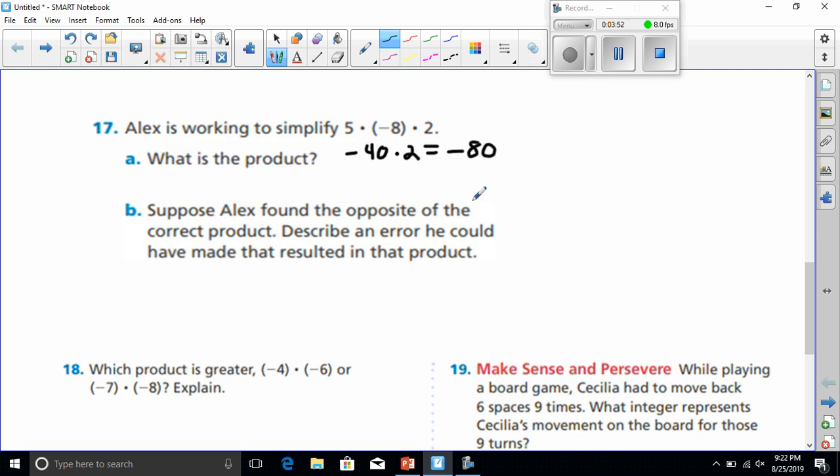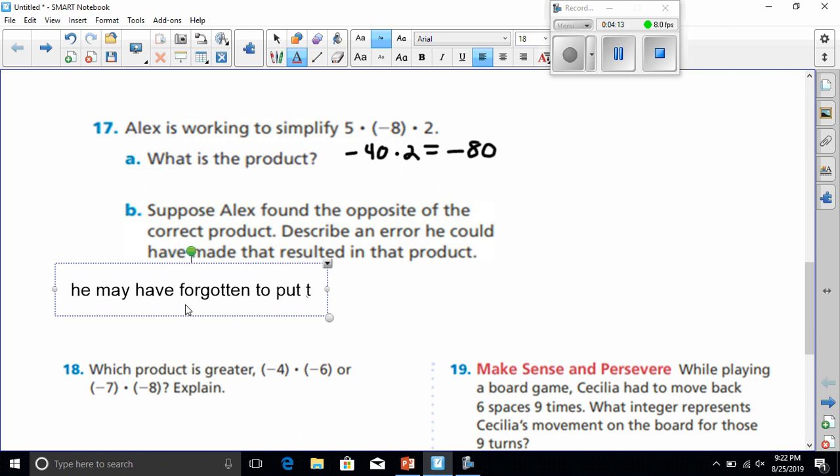So suppose Alex found the opposite of the correct product, or the opposite of negative 80 would be 80. Describe an error he could have made that resulted in it. Well, I'm going to go with he may have forgotten to put the negative sign in front of his answer. All right, that's the best I can come up with on that one.